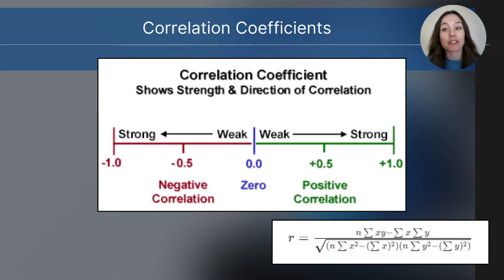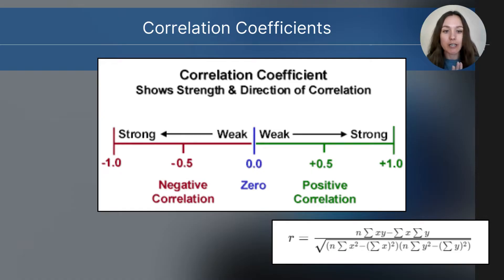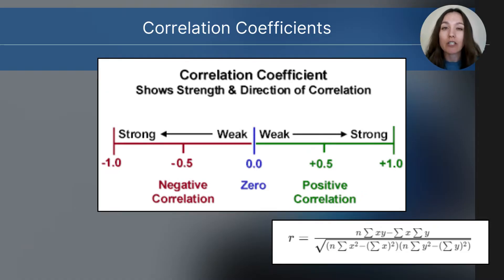A correlation coefficient is a number value that tells you how strong a relationship is between two variables and what direction it is. There is a formula that statisticians can use to calculate the correlation coefficient using all the data they've collected. As AP Psychology students, you do not need to calculate a correlation coefficient, but you do need to know by looking at that number value what it means. The product from this formula equals r, and the correlation coefficient tells you the relationship between two variables.